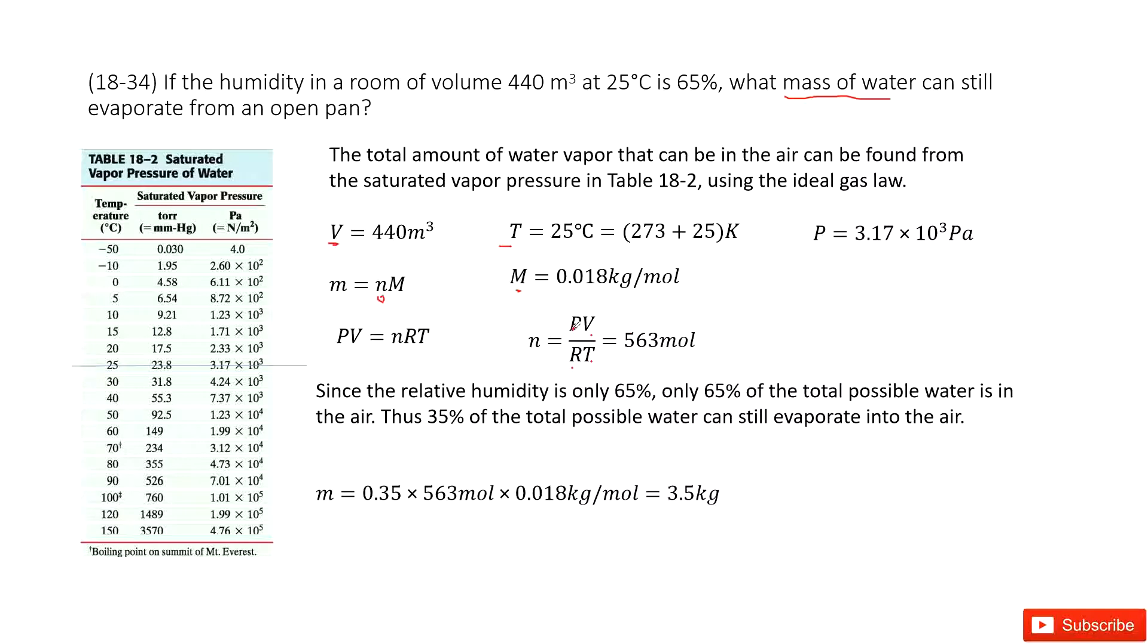So in this way, we can plug in PV and RT. We get the mole number is 563 moles.